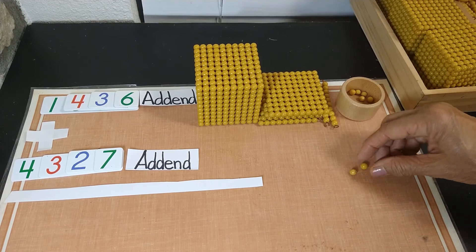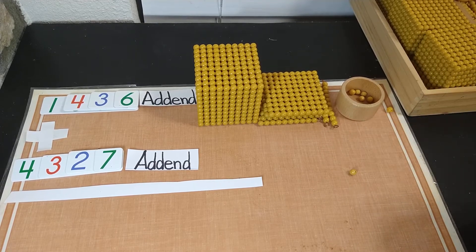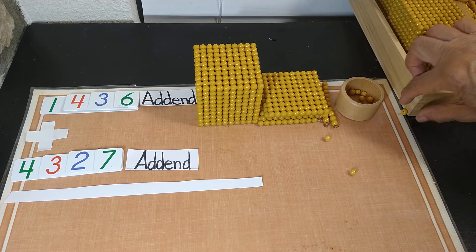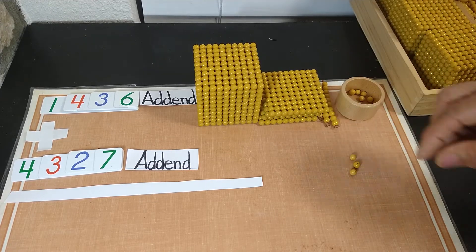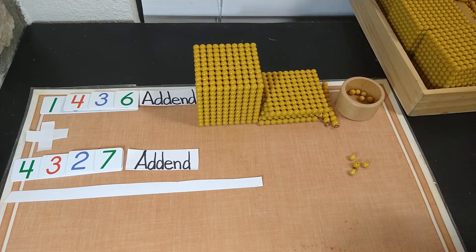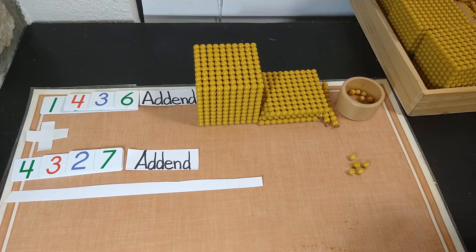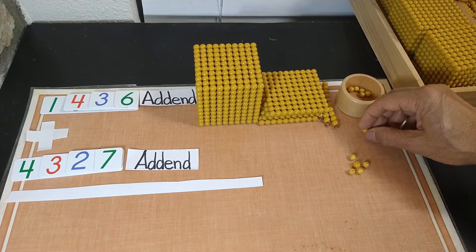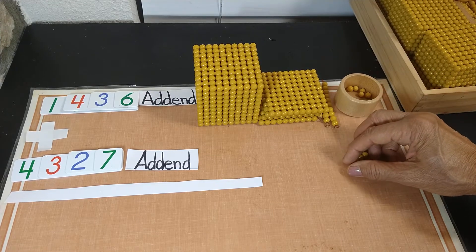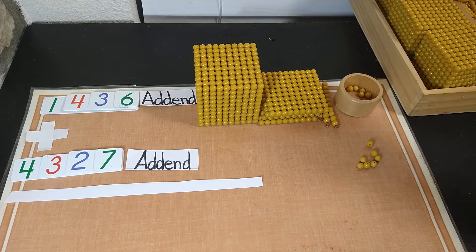1 unit, 2 units, 3 units, stay here please, 3 units, 4 units, 5 units, 6 units and 7 units. So that's all we need in the second addend.